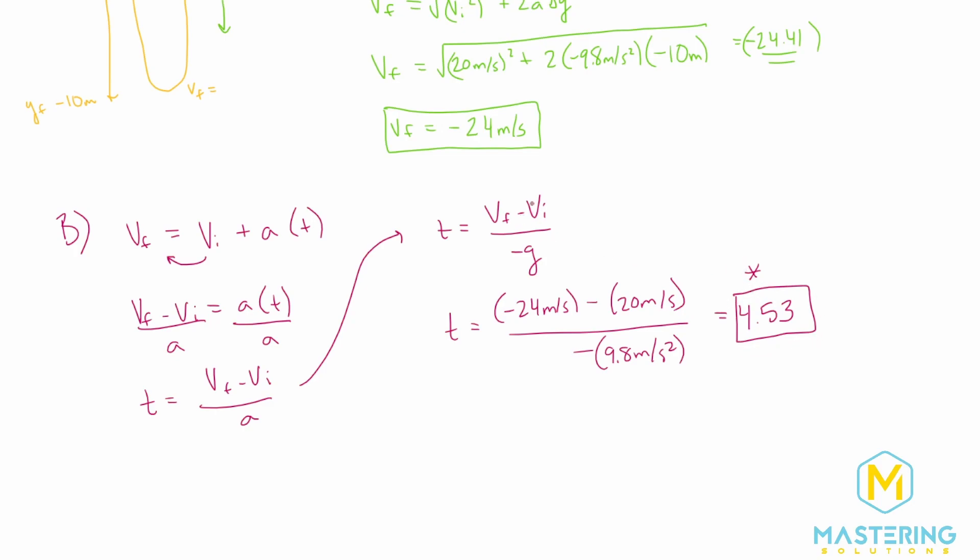So here are your answers. For part A, we have a final velocity of a negative 24 meters per second. And then the time of how long it's in the air is 4.53 seconds. And of course you could round that to 4.5 if you would like.